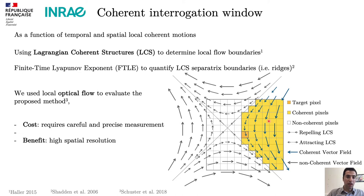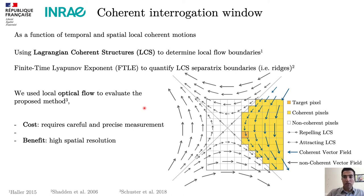To assess this idea, we use a local optical flow approach to evaluate this adjustable interrogation window. We know that optical flow requires quite careful and precise measurement to reduce uncertainties, but instead we can get higher spatial resolution — meaning for each pixel we can have one vector estimation.